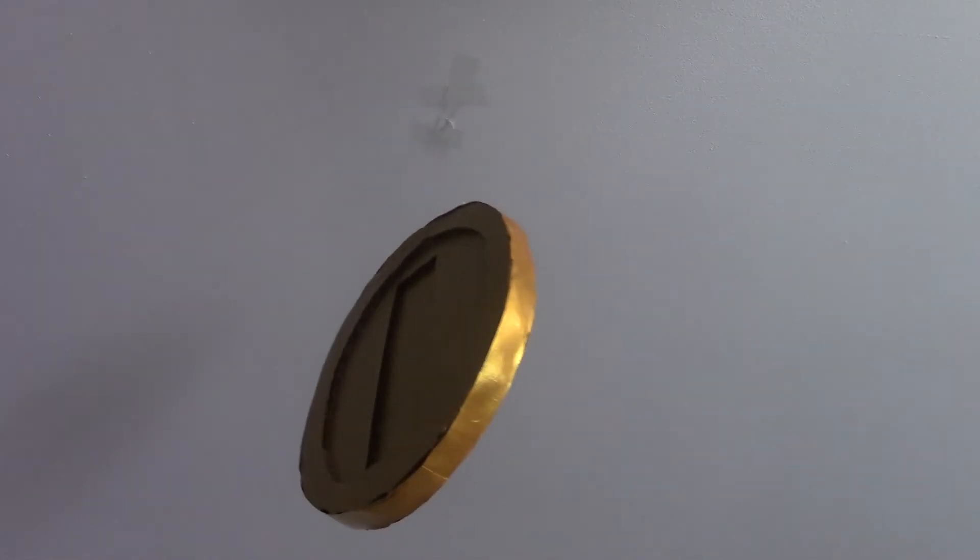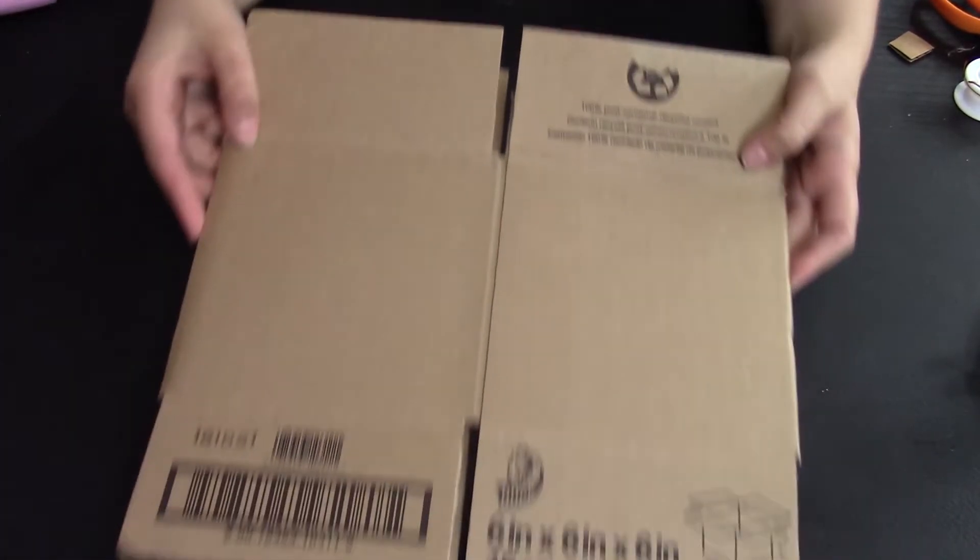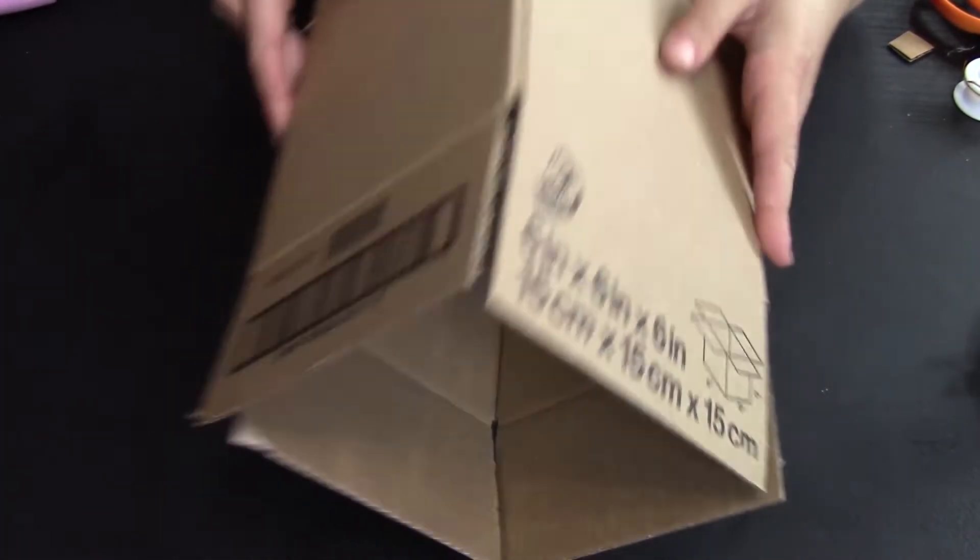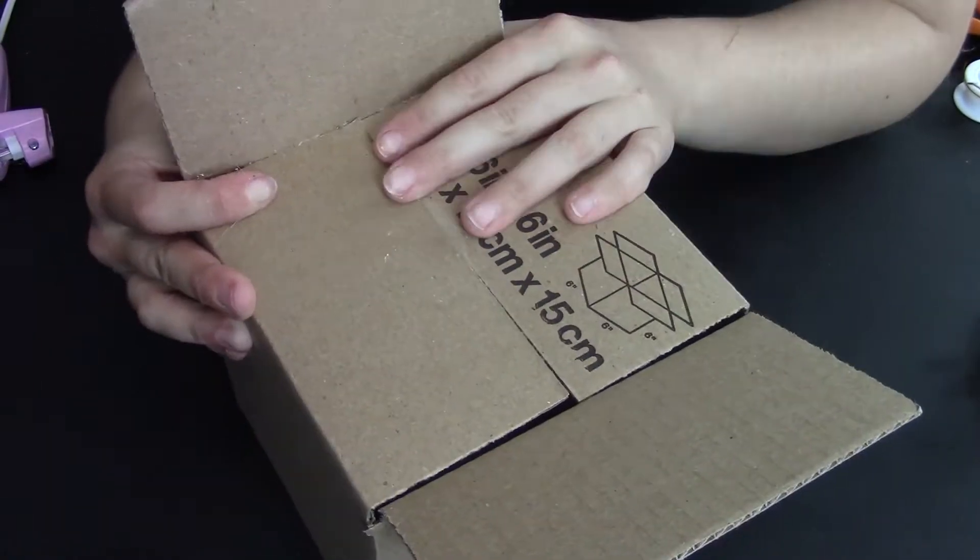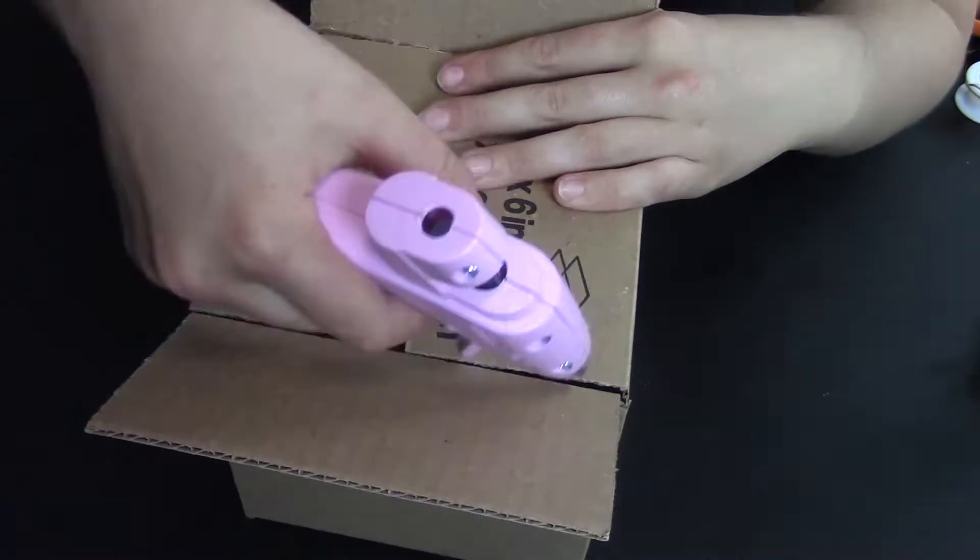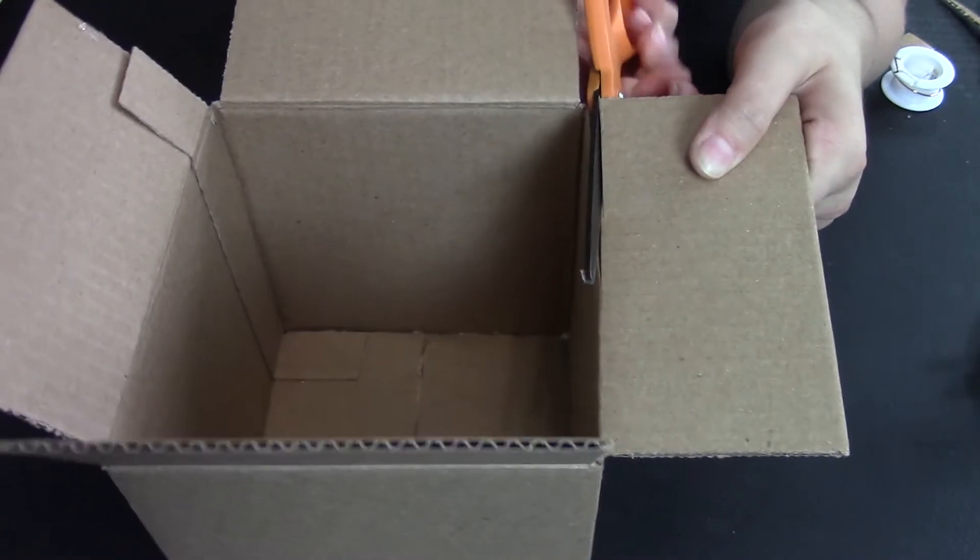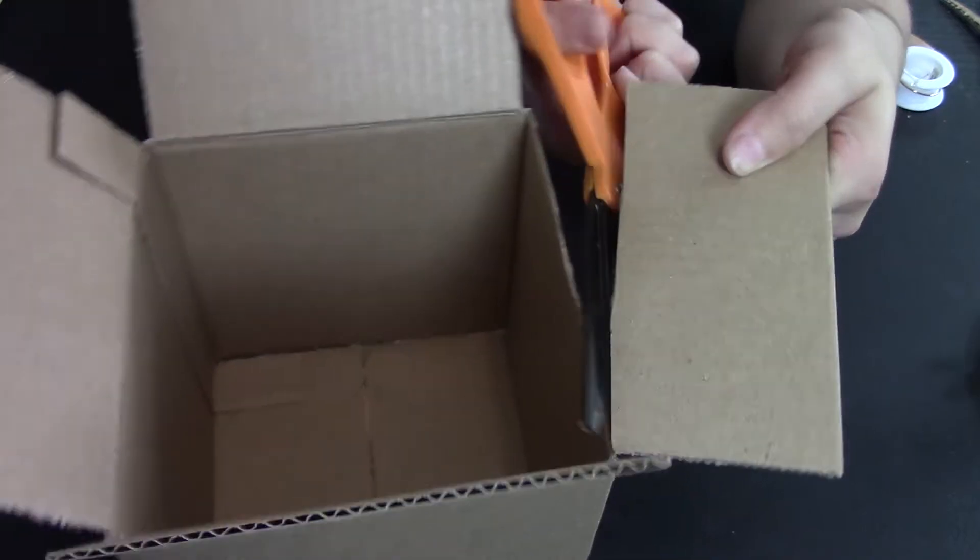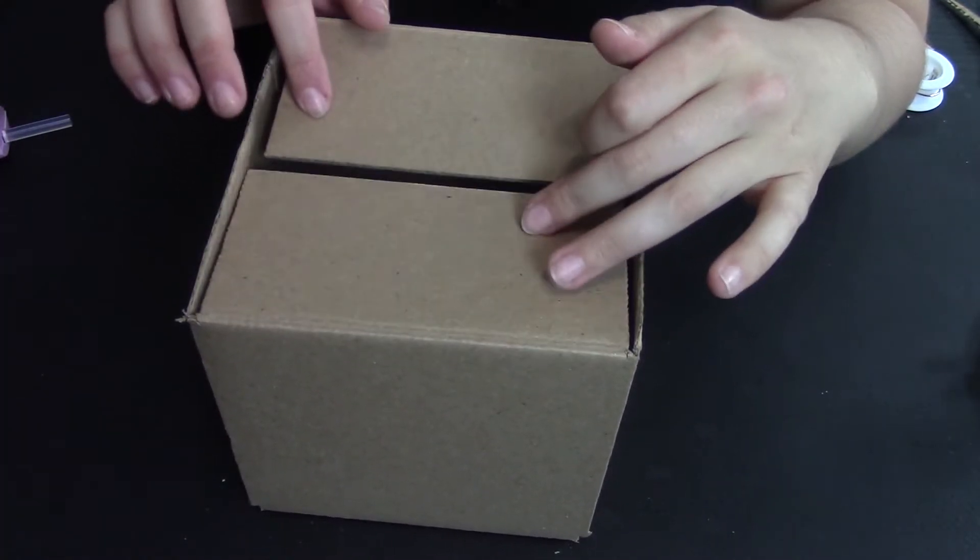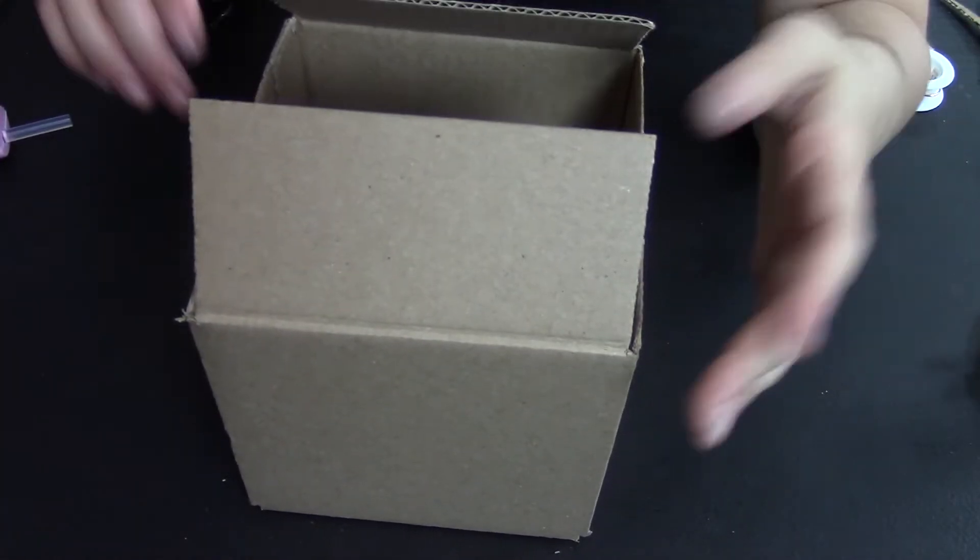Now for the actual Mario question box. I got this box for 48 cents at Walmart—it's kind of small but it'll work. On one end I'm going to completely glue it shut, then go ahead and flip your box over and cut off two of the flaps, two that are across from each other.